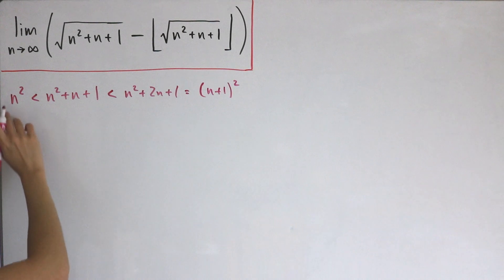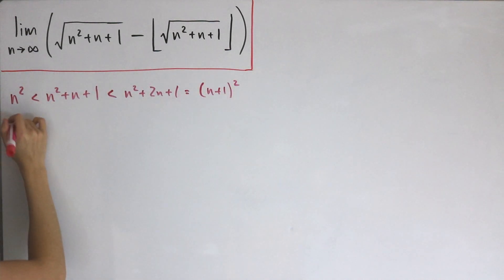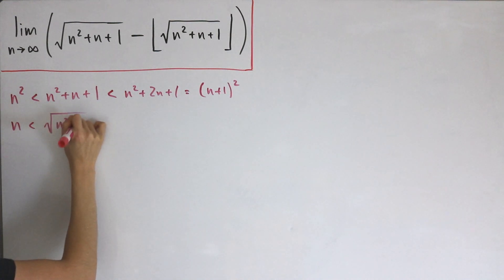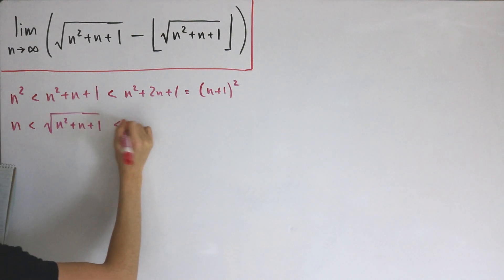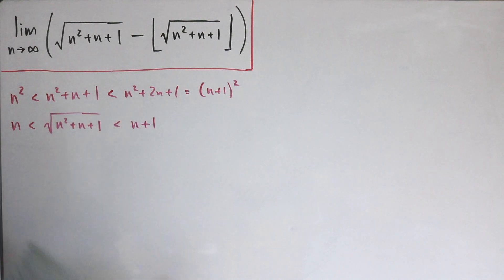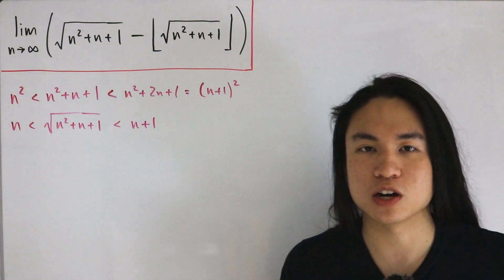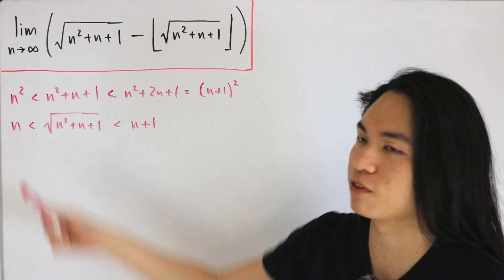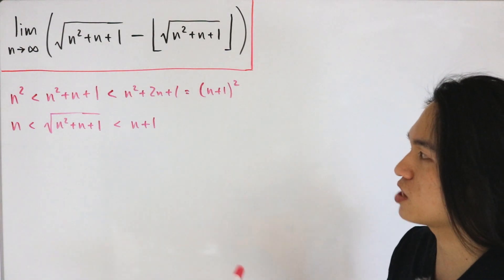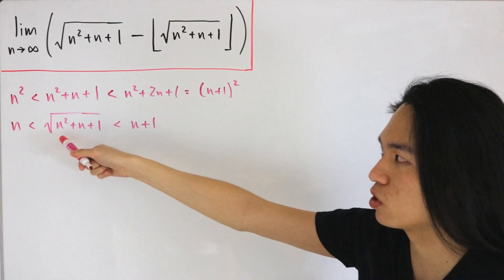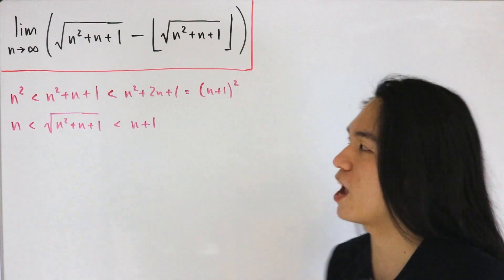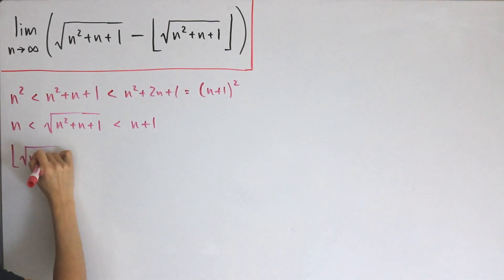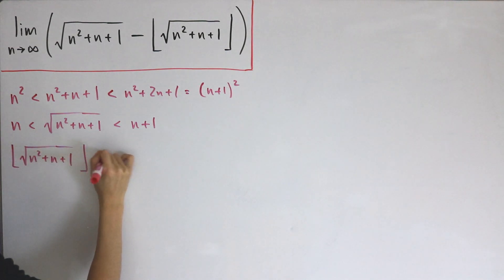Now let's take the square root of everything in this compound inequality. We get that n is strictly less than the square root of n squared plus n plus 1, and that is strictly less than n plus 1. We don't even have to use the definition of the floor function. Since the square root of n squared plus n plus 1 lies strictly between consecutive integers n and n plus 1, the floor of that expression is exactly n.